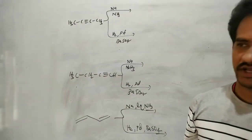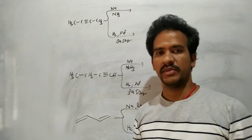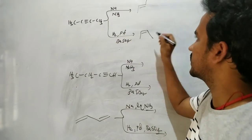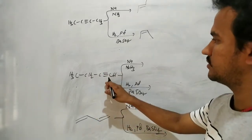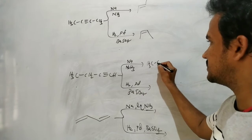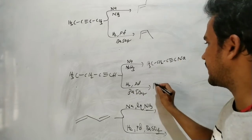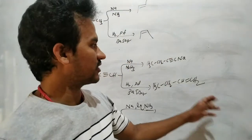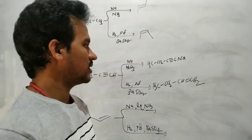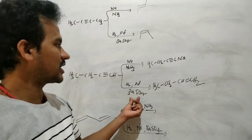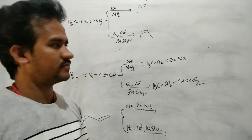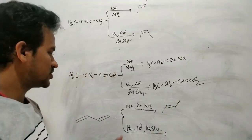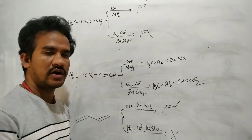Let us now discuss the difference between sodium liquid ammonia and H2 with palladium/barium sulfate (Lindlar catalyst). With sodium liquid ammonia, 2-butyne gives trans-2-butene; with the Lindlar catalyst, we get cis-2-butene. For terminal alkynes, sodium liquid ammonia gives an acid-base reaction, but the Lindlar catalyst reduces the alkyne to the alkene. With Lindlar catalyst, both internal and terminal alkynes are reduced. With sodium liquid ammonia, 1,3-butadiene gives trans-2-butene; with H2/Pd/BaSO4, no reaction occurs.